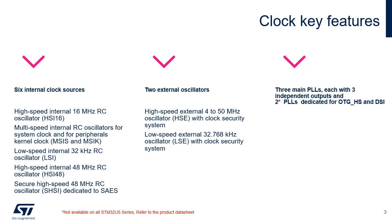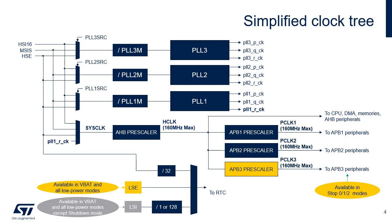The numerous independent peripheral clocks allow a designer to adjust the system power consumption without impacting the communication baud rates, and also to keep some peripherals active in low power modes. Some peripherals support autonomous mode — they are able to generate a kernel clock request and an AHB-APB bus clock request when needed, in order to operate and update their status register even in stop mode. The system clock can be derived from the high-speed internal 16 MHz RC oscillator, from the high-speed external 4 to 50 MHz oscillator, from the multi-speed oscillator system, or from the PLL1 RCK output of PLL1.